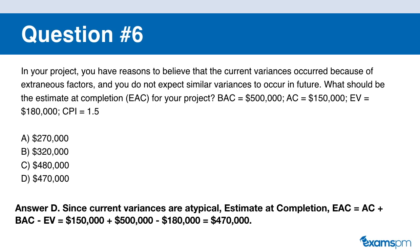If you said D, you are correct. The formula to compute EAC is: AC + BAC − EV = $150,000 + $500,000 − $180,000 = $470,000. There are actually five formulas to compute the EAC, and the way you determine which to use is based on what input values are given. In this case, because we're given BAC, AC, and EV, we plug into this formula.